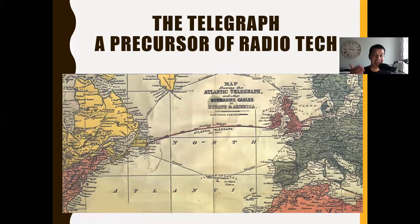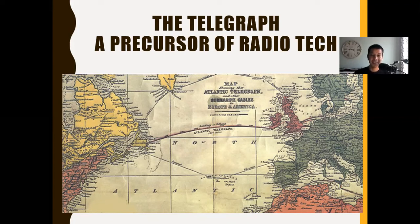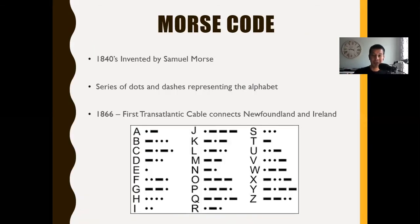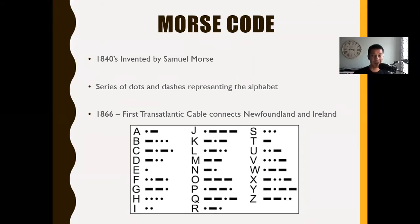Before we start thinking about AM and FM signals, we have to consider that this all began with the telegraph wire and the laying of the transatlantic telegraph cable. In mass communication, technology builds on technology — we continue to see the sophistication and modification of our communicative tools. The series of dots and dashes represents a system, an alphabet, a binary code which we still use today in the digital age.